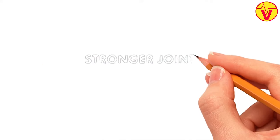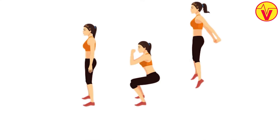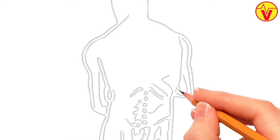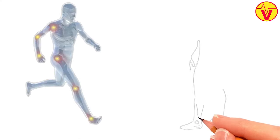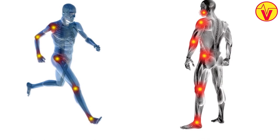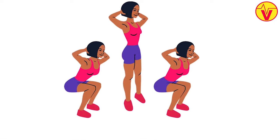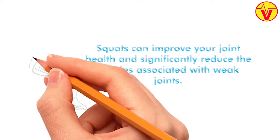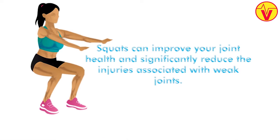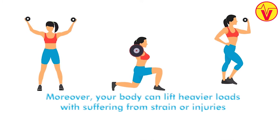2. Stronger Joints. When squats are correctly performed, they apply a significant load which is ideal for strengthening your muscles and actively engaging hip, knee, and ankle joints simultaneously, making them more durable. When performed over an extended period, squats can improve your joint health and significantly reduce the injuries associated with weak joints. Moreover, your body can lift heavier loads without suffering from strain or injuries.